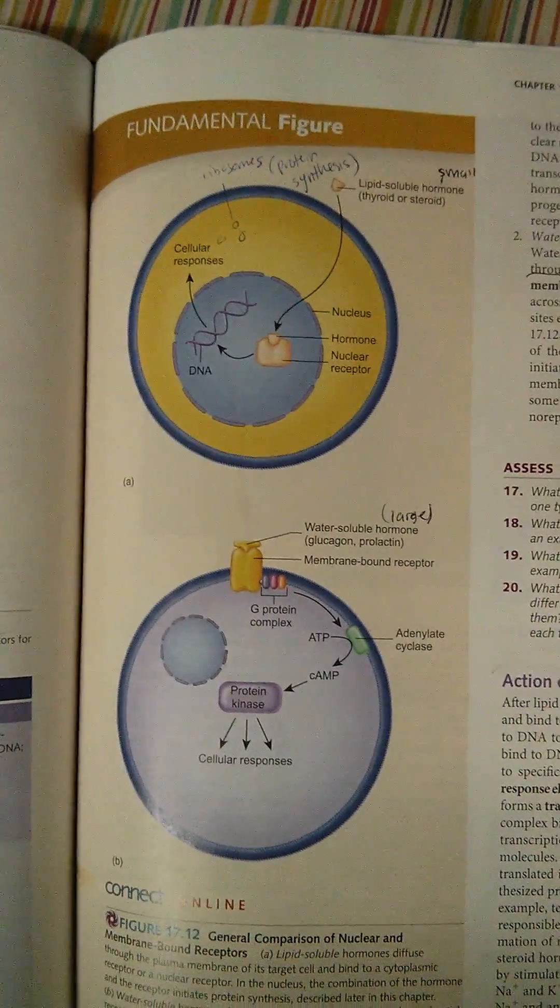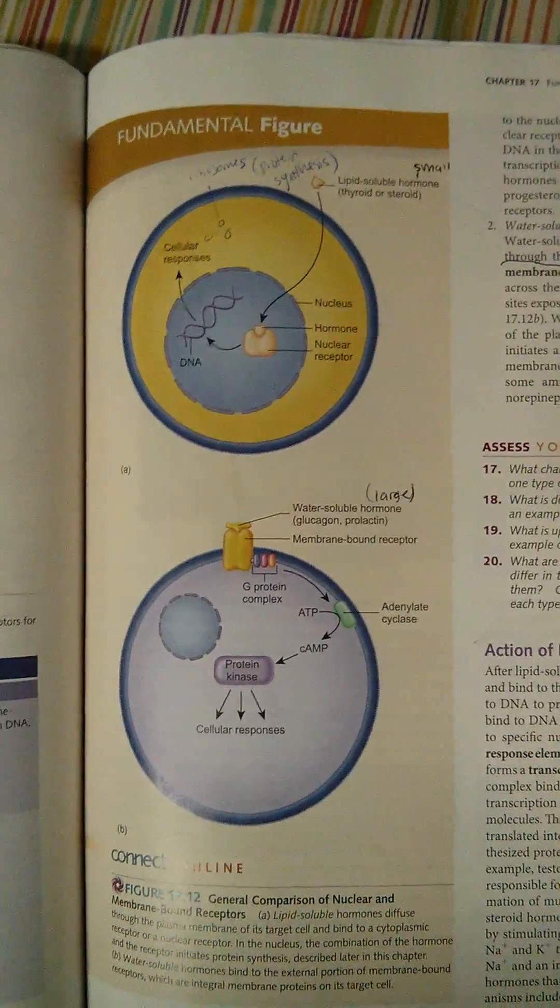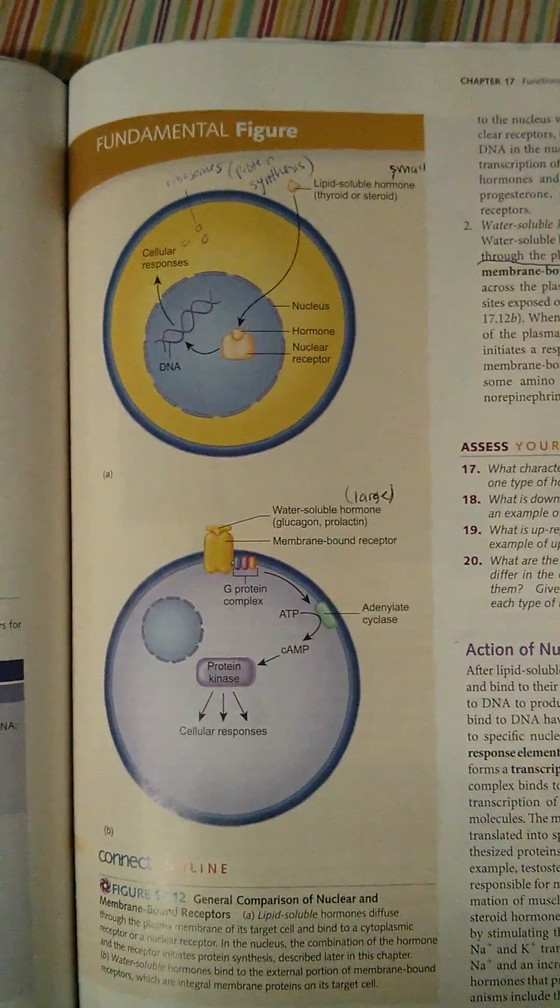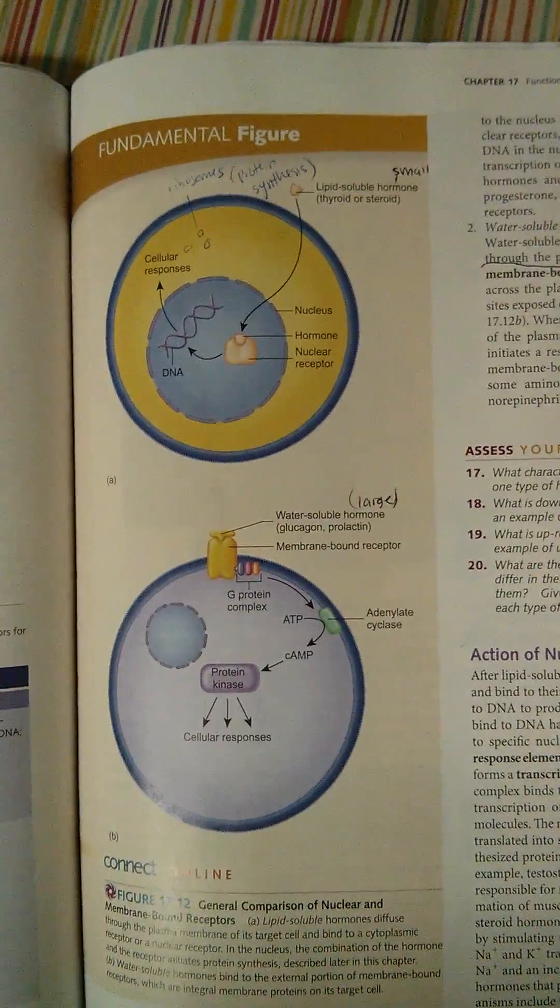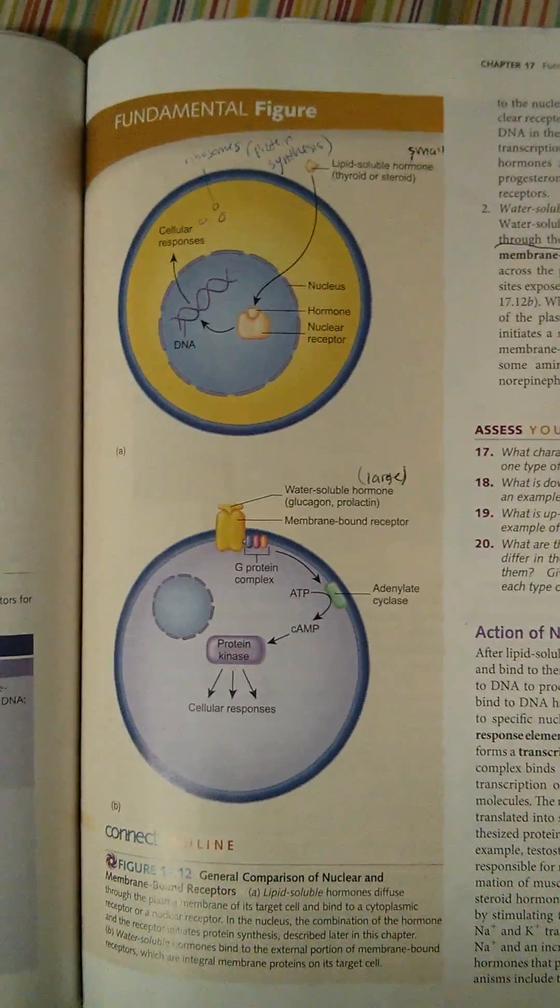So I'm going to be talking about lipid-soluble and water-soluble hormones. Now the word soluble can be confusing. It basically just means that it can dissolve. So for example, salt and sugar both dissolve in water, so that means that they are both water-soluble.